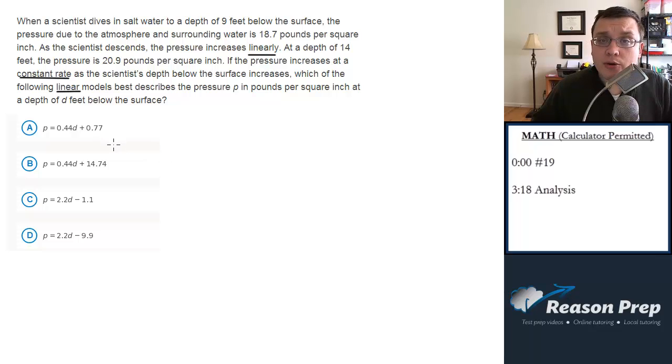We just need to come up with the equation of a line given the data here. What are our x values, our d values in this case? Create two points here. At 9 feet, we're at a pressure p of 18.7 pounds, so we're going to do 9, 18.7.